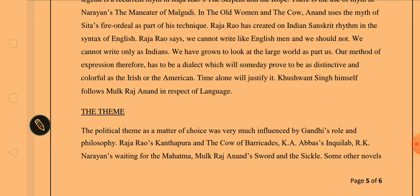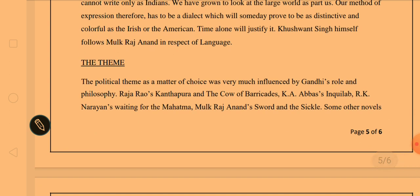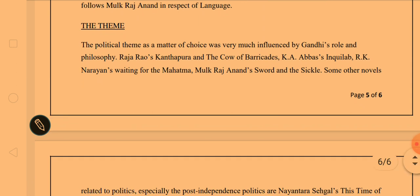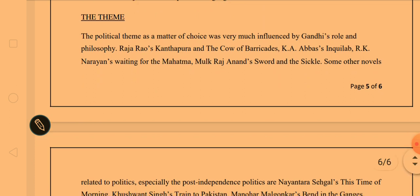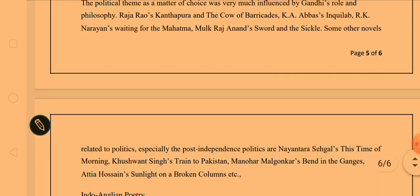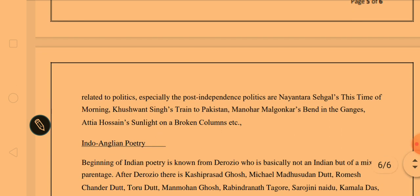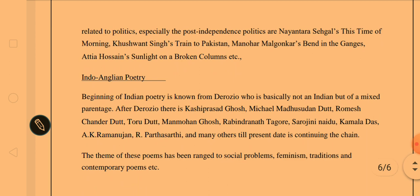The political theme in Indo-Anglian fiction was greatly influenced by Gandhi's role and philosophy. Examples include Raja Rao's Kanthapura and Cow of the Barricades, K.A. Abbas's Inquilab, R.K. Narayan's Waiting for the Mahatma, and Mulk Raj Anand's Sword and the Sickle. Post-independence political novels include Nantara Sahgal's The Time of Morning, Khushwant Singh's Train to Pakistan, Manohar Malgaonkar's Bend in the Ganges, and Attia Hussain's Sunlight on a Broken Column.